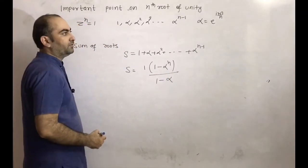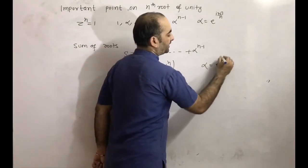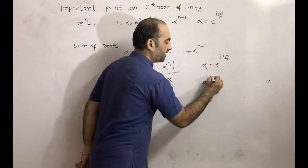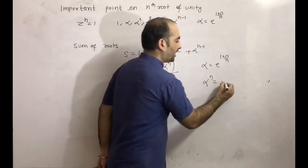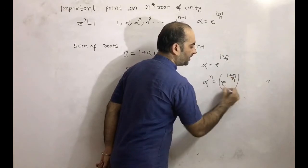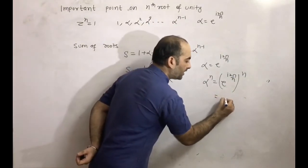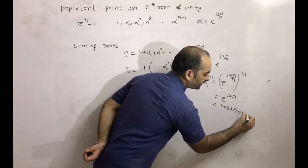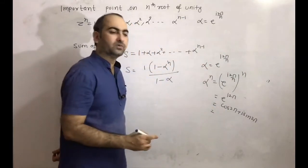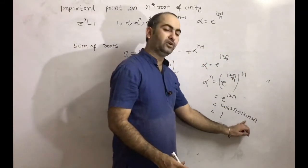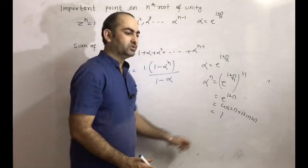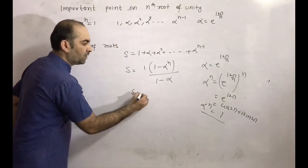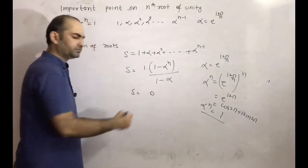Here alpha = e^(i·2π/n), so alpha^n = (e^(i·2π/n))^n = e^(i·2π) = cos(2π) + i·sin(2π) = 1 + i·0 = 1. So alpha^n = 1. Substituting back, S = (1 - 1) / (1 - alpha) = 0. So the sum of the nth roots of unity is 0.